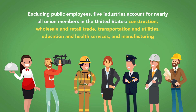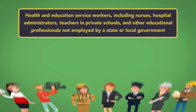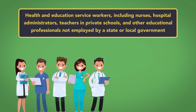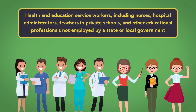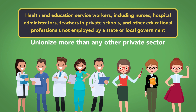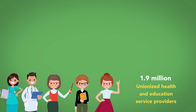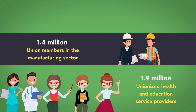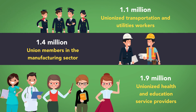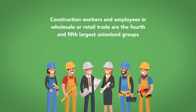Excluding public employees, five industries account for nearly all union members in the United States: construction, wholesale and retail trade, transportation and utilities, education and health services, and manufacturing. Health and education service workers, including nurses, hospital administrators, teachers in private schools, and other educational professionals not employed by a state or local government, unionize more than any other private sector employees. There are 1.9 million unionized health and education service providers, compared with 1.4 million union members in the manufacturing sector and 1.1 million unionized transportation and utility workers. Construction workers and employees in wholesale or retail trade are the fourth and fifth largest unionized groups, with about 900,000 union workers in each industry.